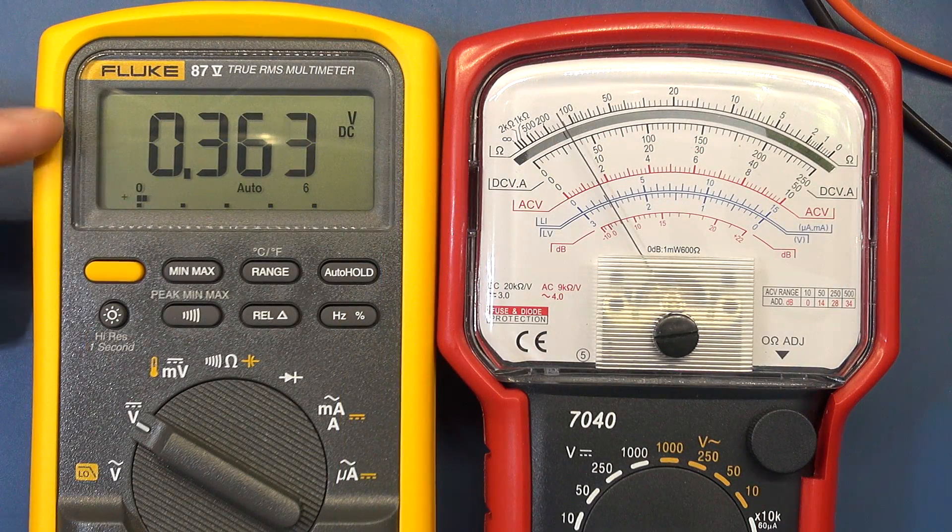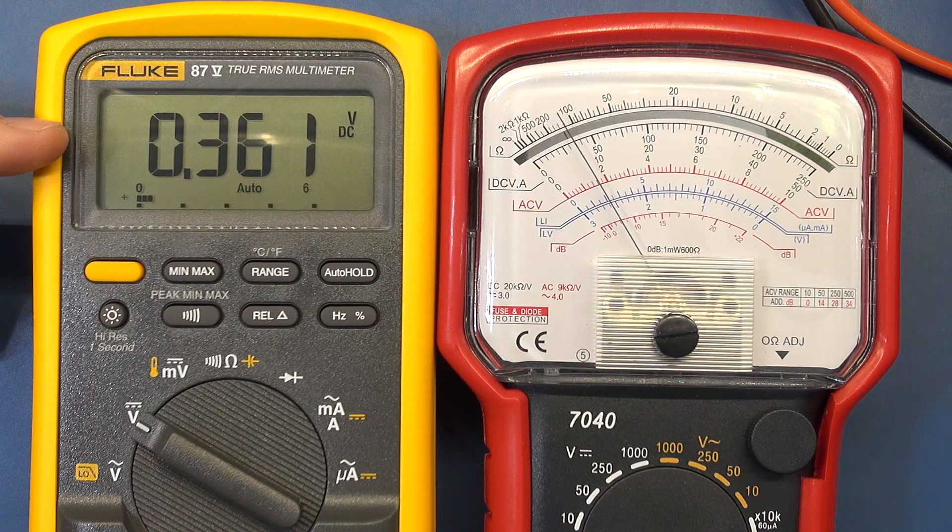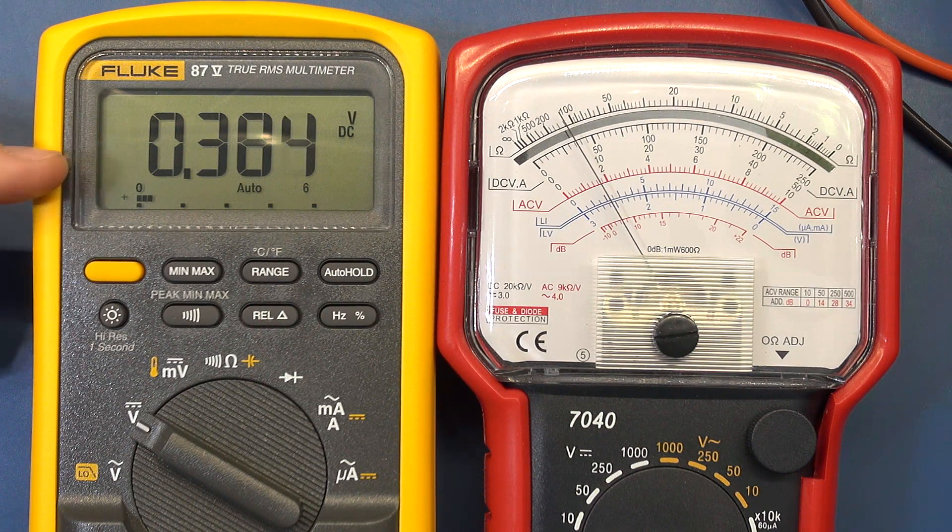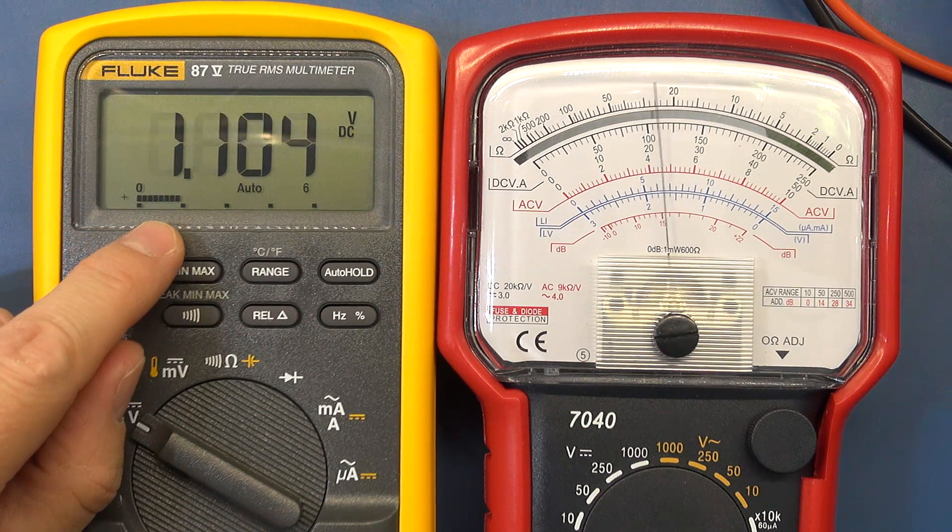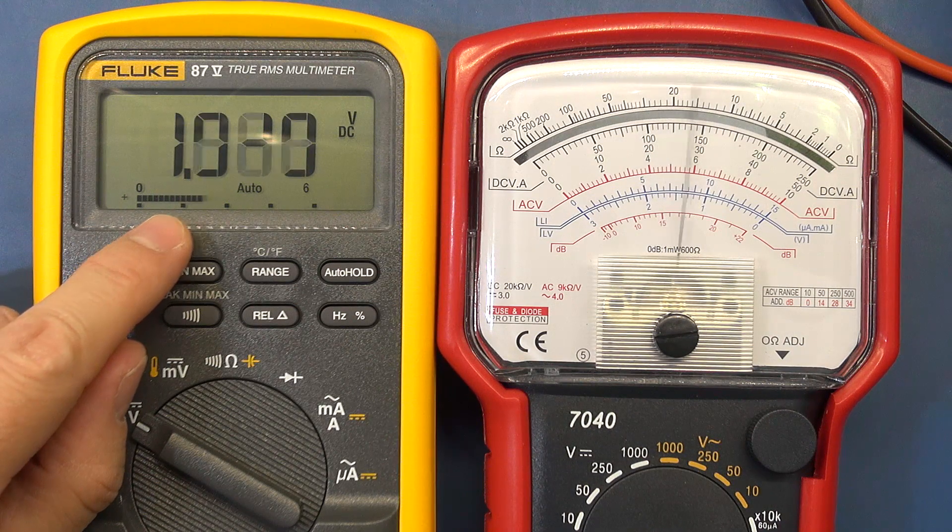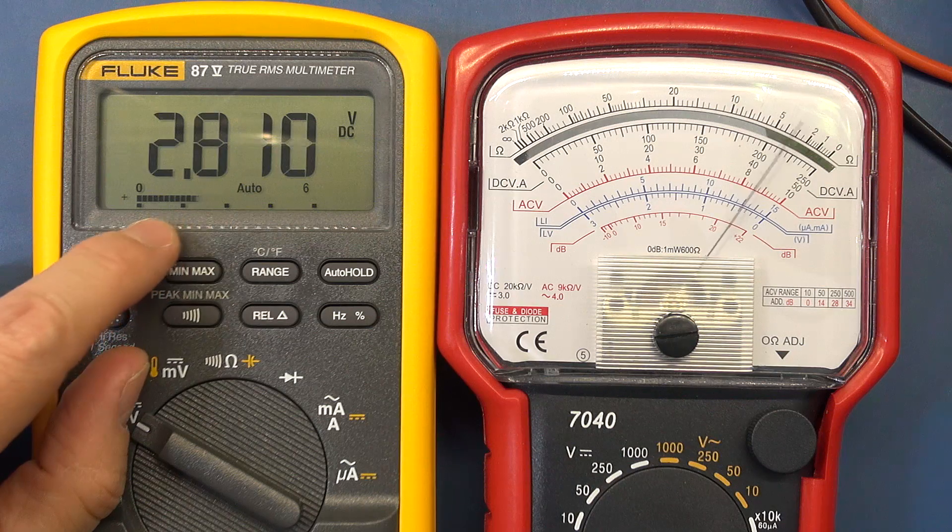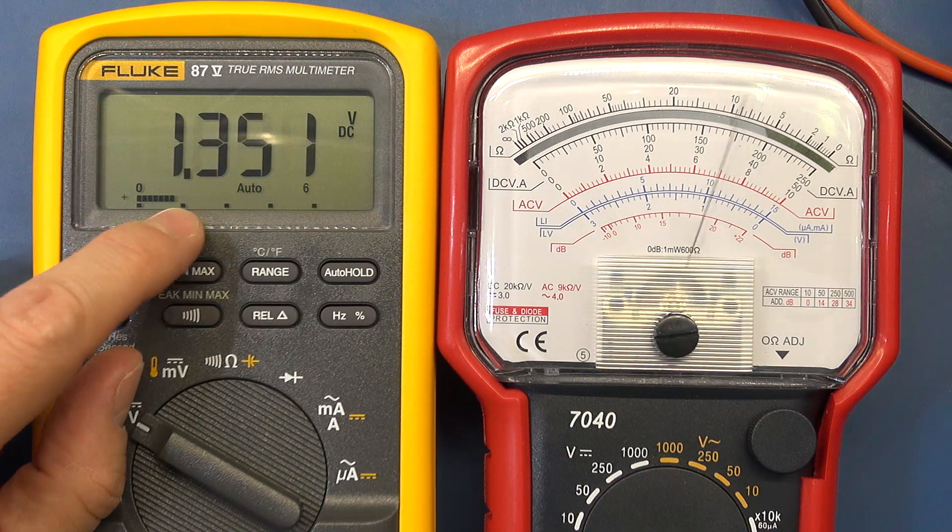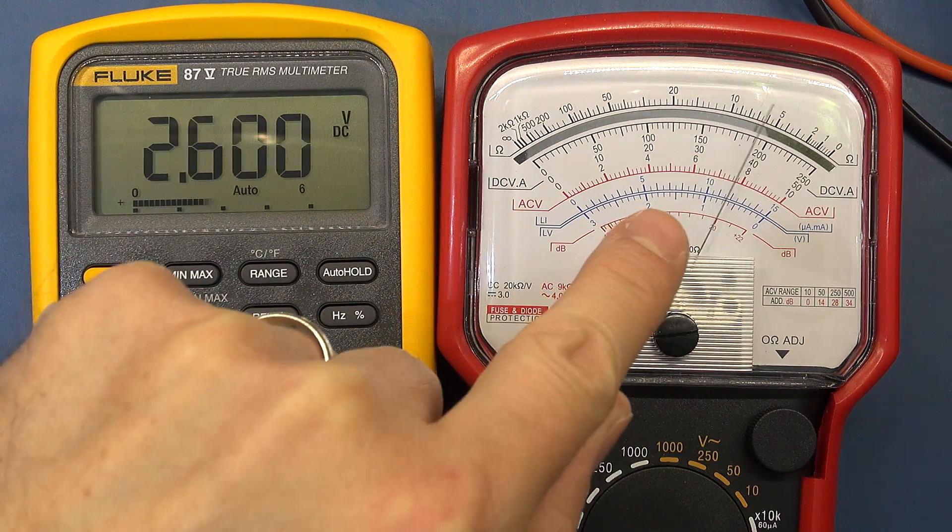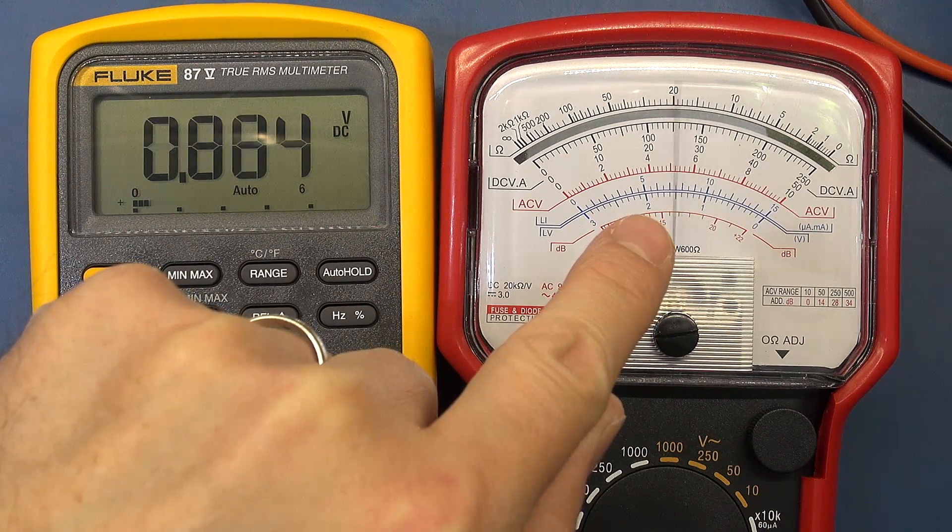This certainly becomes more apparent when you have a fluctuating signal. Now if this signal is not fluctuating too much the Fluke copes not too badly because it's got a nice representation on its bar graph at the bottom of the display. As you can see what they're trying to do is indicate that you have got some fluctuation and try and emulate what the needle is doing on an analog multimeter.